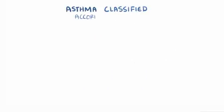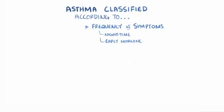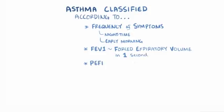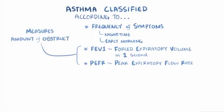Now asthma can be classified according to the frequency of symptoms, in particular nighttime and early morning symptoms, the FEV1 or forced expiratory volume in one second, the PEFR or peak expiratory flow rates, both of which measure the amount of obstruction in the airways, and finally how often a person is using asthma medication to help with the symptoms.